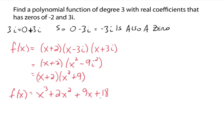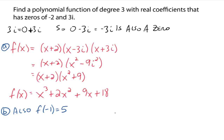This polynomial has the three zeros: negative 2, 3i, and negative 3i. Now let's do part B. f of x equals x cubed plus 2x squared plus 9x plus 18 is one third-degree polynomial with those three zeros, but is it the only one? No, it's not the only one — go back to when we did vertical stretching and vertical shrinking of graphs.